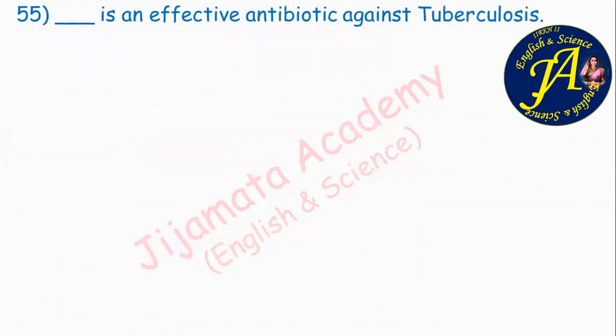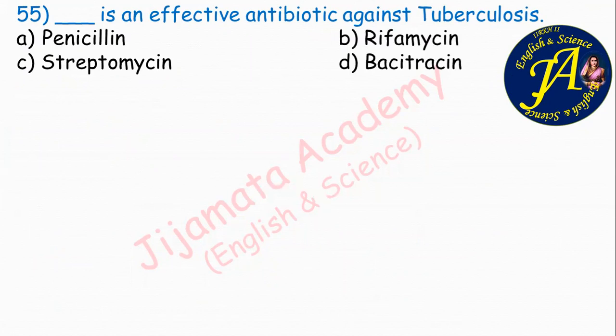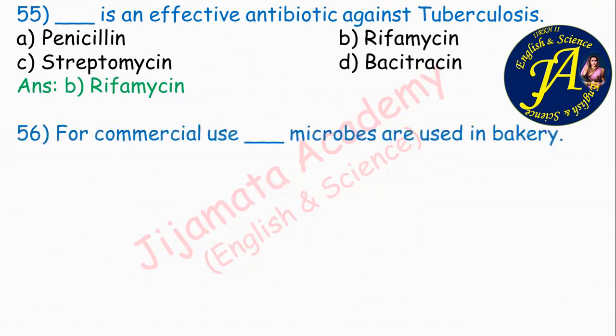Dash is an effective antibiotic against tuberculosis. Options are penicillin, rifamycin, streptomycin, bacitracin. Option B: rifamycin is the correct answer. Rifamycin is an effective antibiotic against TB or tuberculosis.